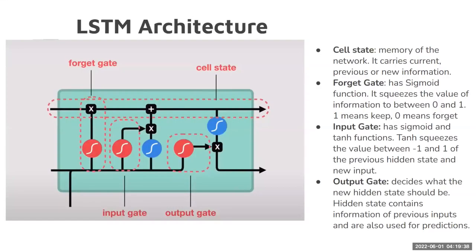In the LSTM architecture, we have a cell state, which is the memory of the network. It carries the current, previous, and new information. On the most left-hand side of the architecture is the forget gate, which has a sigmoid function. The sigmoid function adjusts the value of the previous word or new input to either 0 or 1 — 0 meaning it forgets the word, and 1 meaning it keeps the word. This is the basic functionality of a forget gate.